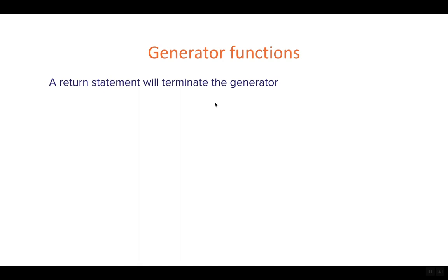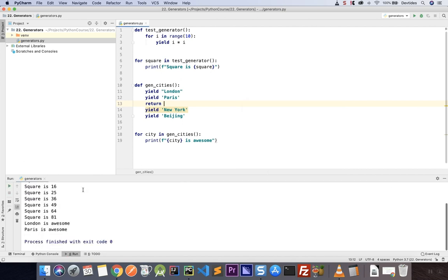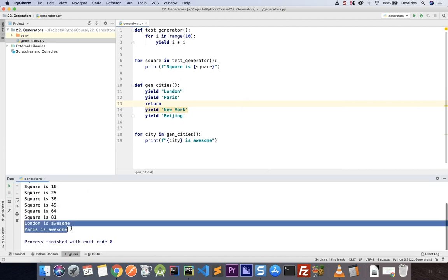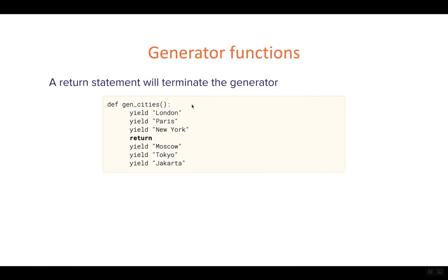Now, a return statement will terminate the generator. So if we place a return statement at any point, the generator will terminate even though it might have more yield statements later on. So I'm going to put my return in the middle here somewhere. And that means only two values are produced and then the function finishes. I'm just going to comment that out for now.